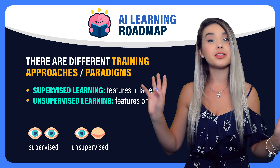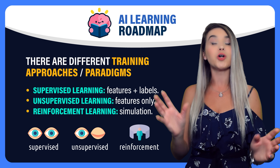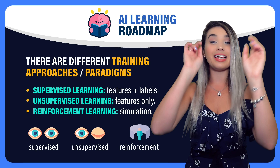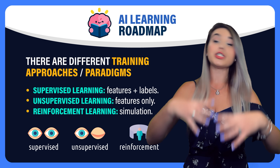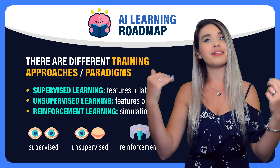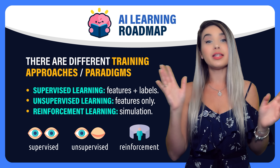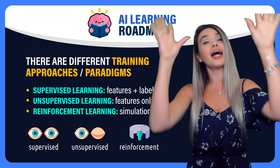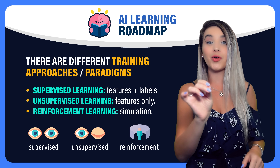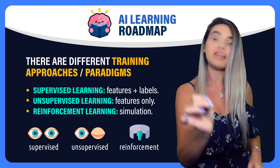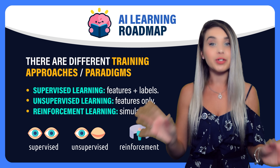The most extreme approach is called reinforcement learning, where we fully rely on trial and error. In fact, the absence of data is what we need here. For example, we drop our model in the middle of a video game and don't even share the rules with it — we just want the model to figure out the entire world on its own. And if we give it enough time, the model will learn to play the game even better than us humans. This is what we call a simulation.